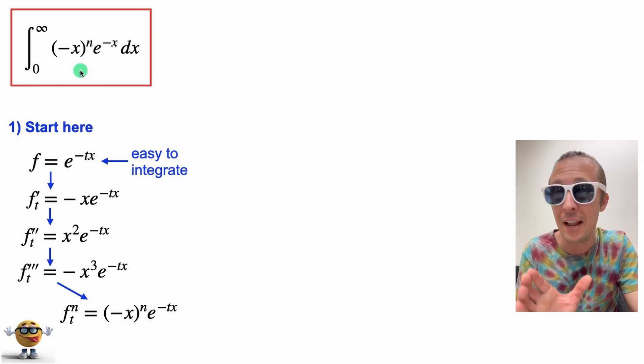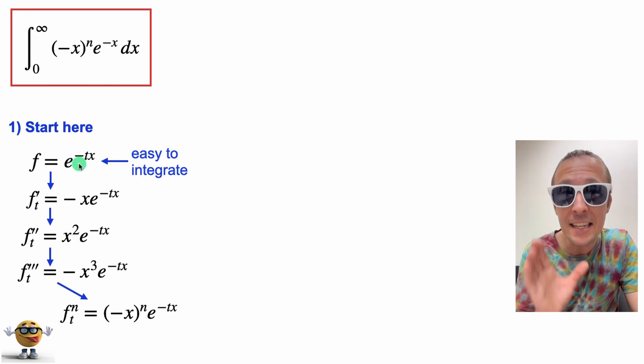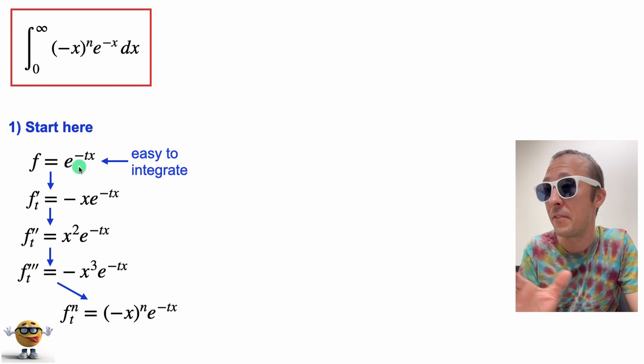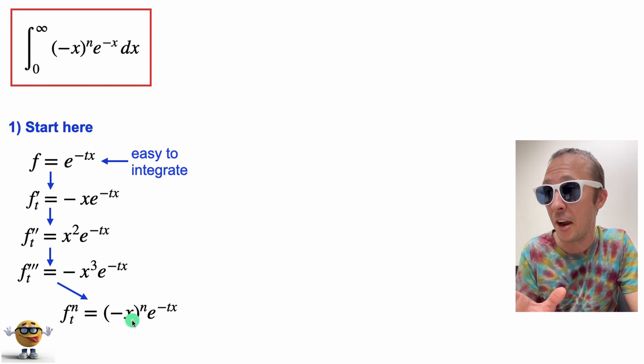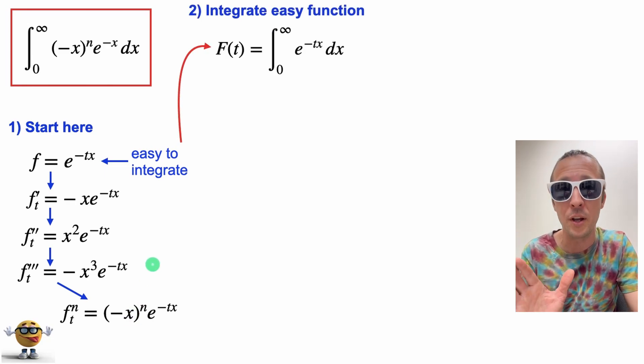So this is the game plan. We'll integrate the easy function, and then once we have a value or a function of the integral, we're going to take the derivative as many times as we need to get to the function that we desire. Now it's a little different, a little odd at first, but I'll show you step by step what's going on.